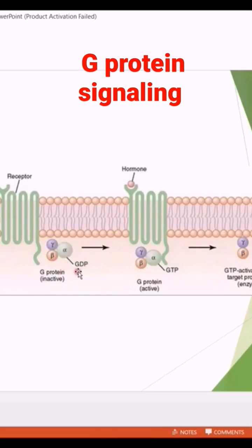This is the inactive form of the G protein. When the hormone comes, it binds with the extracellular part of the receptor. A conformational change occurs in the receptor.